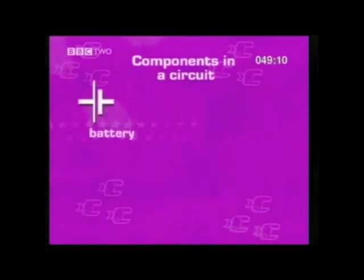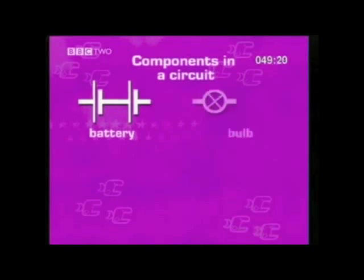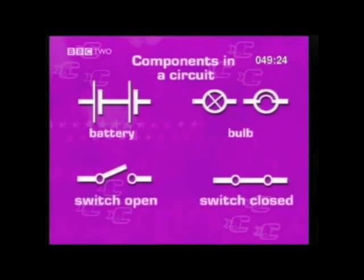Other components of circuits that you need to know about are light bulbs and switches. Let's run through how they're symbolised on a circuit diagram. A cell or battery will look like this, and if there is more than one, you will draw two symbols next to each other. The battery supplies the electrical energy. The light bulb will have this symbol, and sometimes this one, and a switch will either be open or closed, showing whether the circuit is off or on.